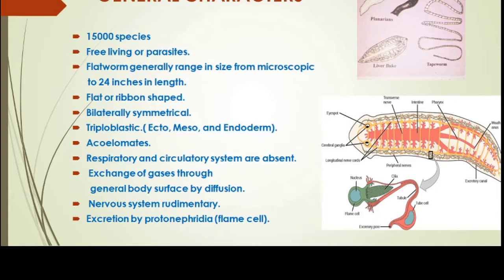We have already discussed these terminologies in class — I am just recalling your memory. The next character is germinal layers. This animal is triploblastic, meaning three germinal layers are present: ectoderm, mesoderm, and endoderm. These germinal layers are formed during embryonic development and are responsible for the formation of different organs and organ systems. This is the first phylum which is actually triploblastic.